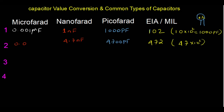Third example: we start with 10 nanofarad. To convert to picofarad, multiply by 1000: 10 × 1000 = 10,000 picofarad.